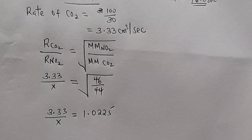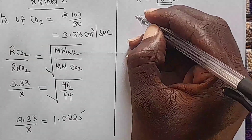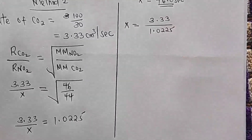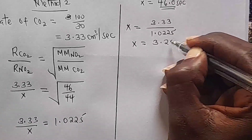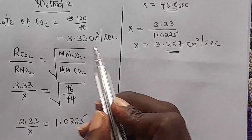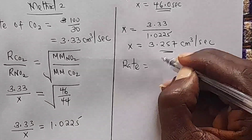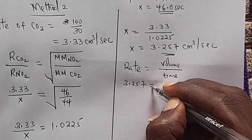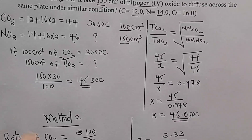To get x: x = 3.33 ÷ 1.0225 = 3.257 cm³ per second. That is the rate of nitrogen dioxide. Now that we have the rate, we can get time using rate = volume ÷ time. The rate is 3.257 and the volume of nitrogen dioxide is 150 cm³.